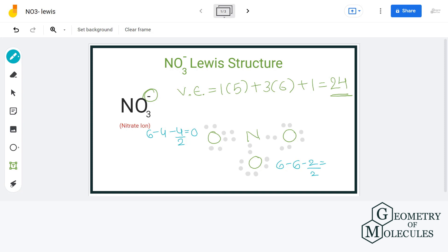Here we have six valence electrons minus six non-bonding electrons minus two bonding electrons divided by two. That will give us a formal charge of minus one. For nitrogen, we have five valence electrons minus zero non-bonding electrons minus eight bonding electrons divided by two. That will give us a formal charge of plus one.